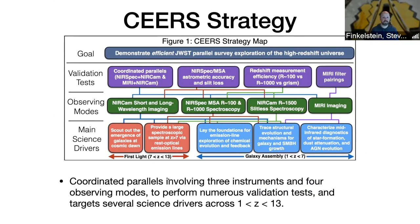We wanted to test coordinated parallels — in this program we do NIRSpec plus NIRCAM at the same time, MIRI plus NIRCAM at the same time, both imaging and NIRCAM GRISM spectroscopy. We want to test astrometric accuracy of NIRSpec MSA observations and slit losses, although some of this was cut from our work package due to funding constraints, though the data will still be there for folks to look into slit losses. We want to test redshift measurement efficiency, so we're doing in the same fields both the R=1000 grating and the R=100 prism, as well as NIRCAM and GRISM, so you might see some objects observed in all three.